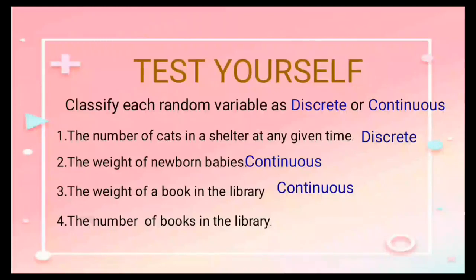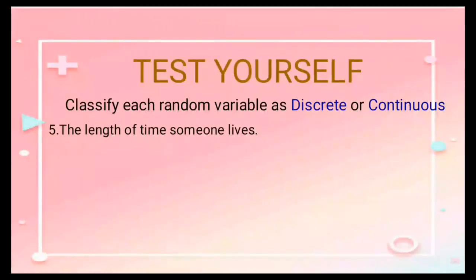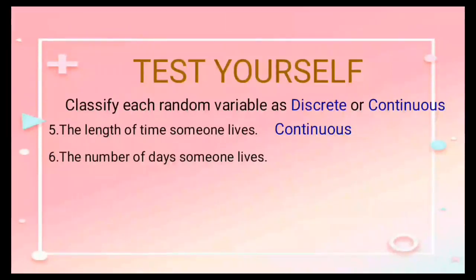Number four: the number of books in the library. Yes, it is discrete. Number five: the length of time someone lives. It is continuous. Number six: the number of days someone lives.